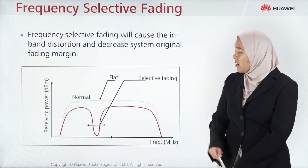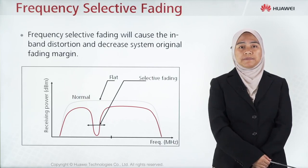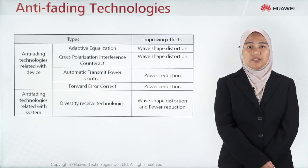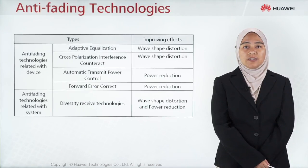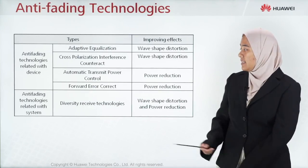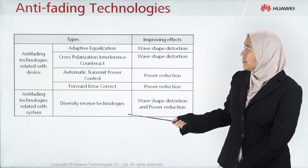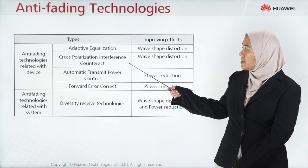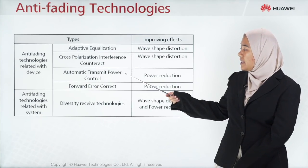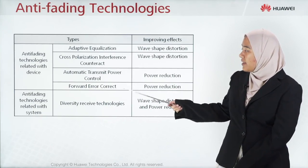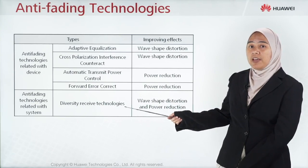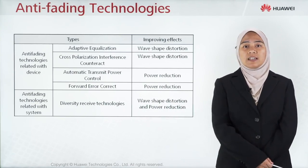There are two types of anti-fading technologies. One is anti-fading technologies related with device, and another related with system, as shown in this table. Device-related technologies include adaptive equalization, cross-polarization interference counteract (XPIC), ATPC, and forward error correction. For system-related anti-fading technologies, we have diversity reception.